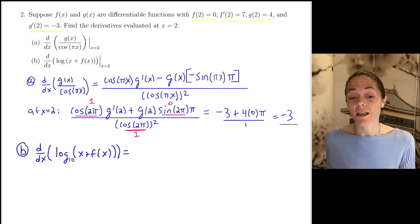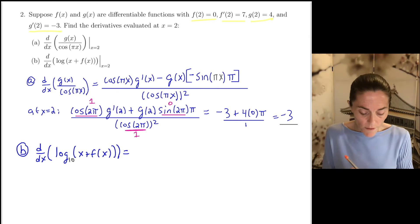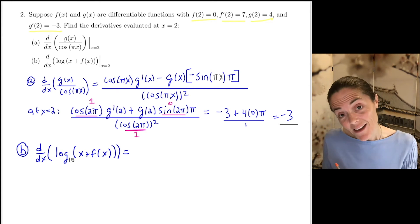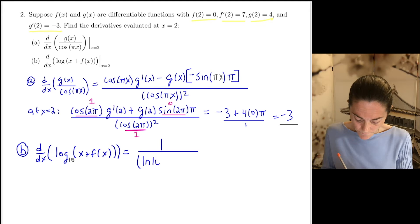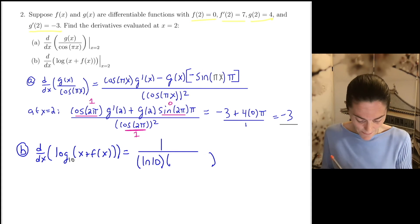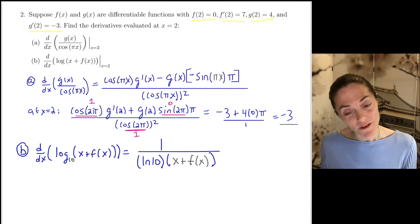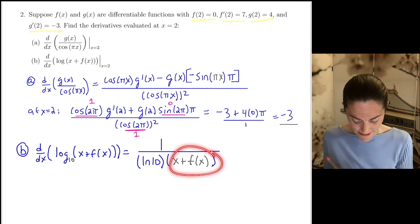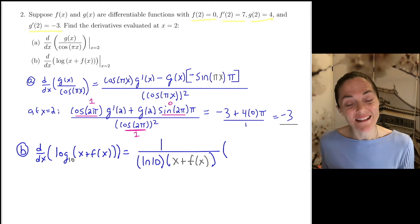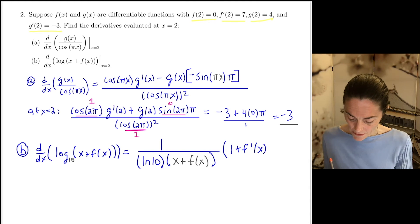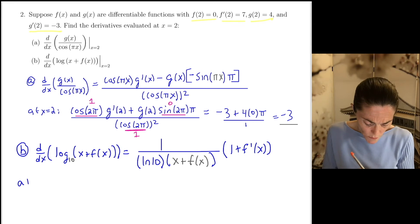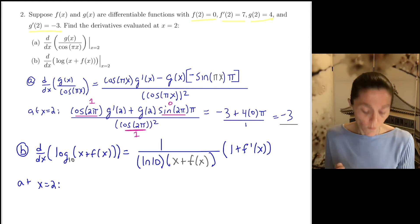This was derivative of the outside evaluated at the inside, and then — don't forget your parentheses — times derivative of the inside function. This would be 1 plus f prime of x. Now we just do the same as above. At x equals 2, we have 1 over ln 10, then we have 2 plus f of 2, then we multiply by 1 plus f prime of 2.